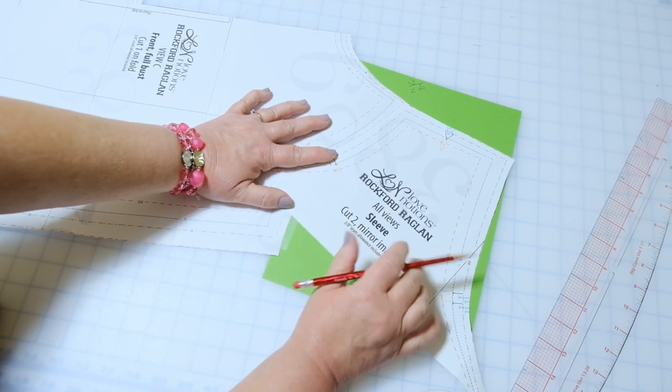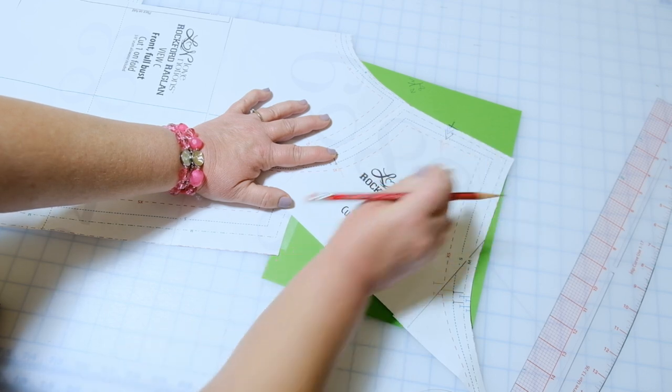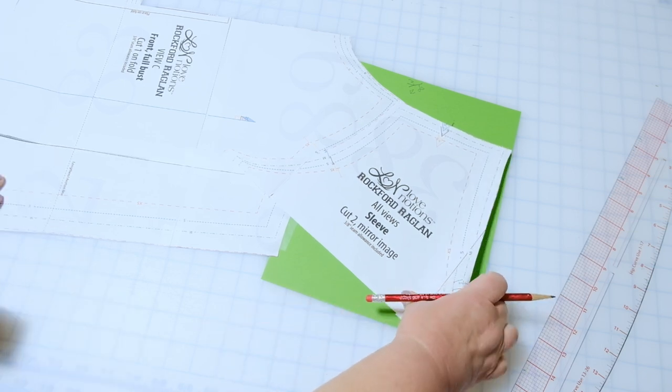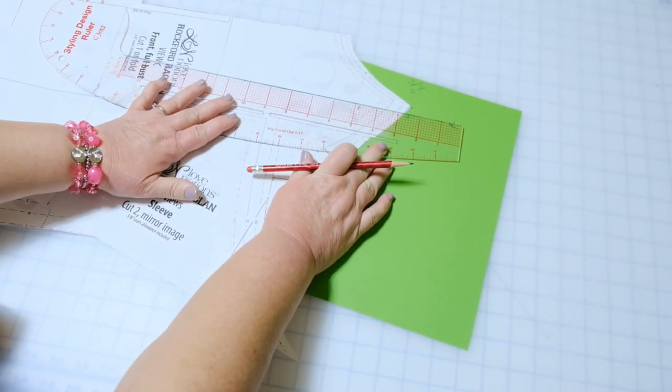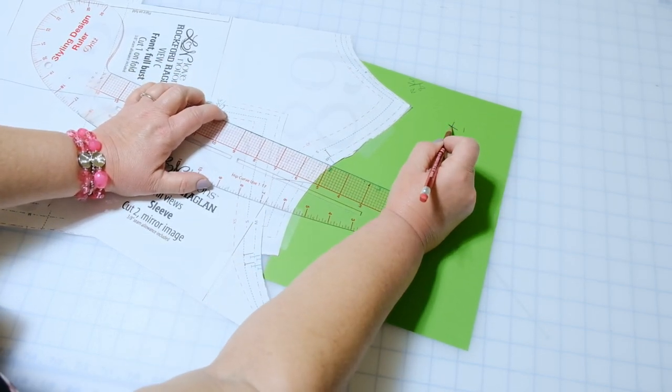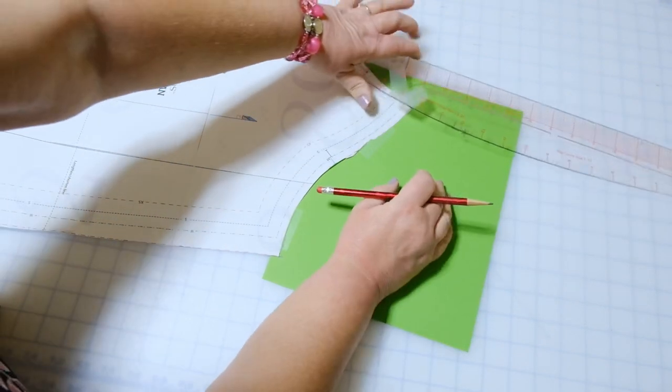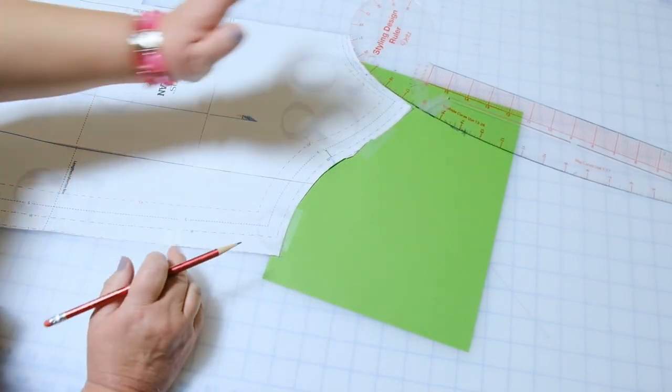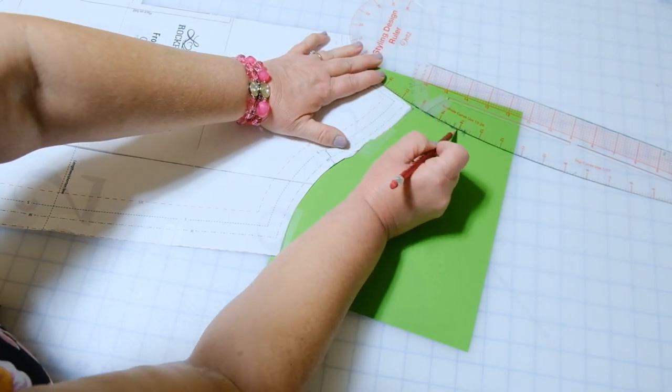So I'm going to overlap these pieces by the seam allowance, which is 3/8. So this is a 3/8 seam allowance right here. So I'm going to overlap that and then I'm simply going to mark this point right here. And that is how high up this piece would need to be. However, I'm going to add just a half an inch of seam allowance to that so that it has a little bit of room to overlap when we get there.